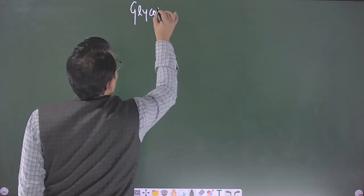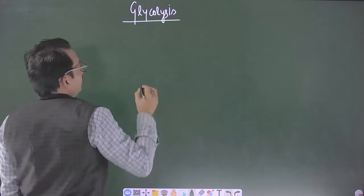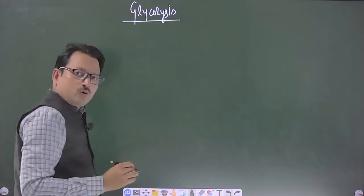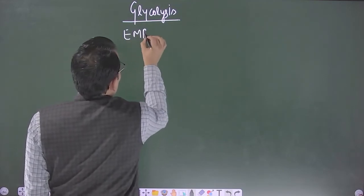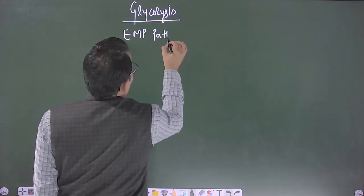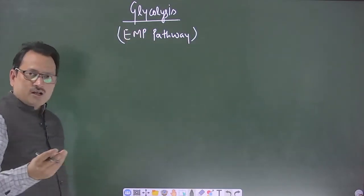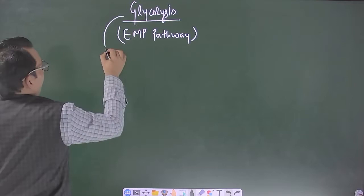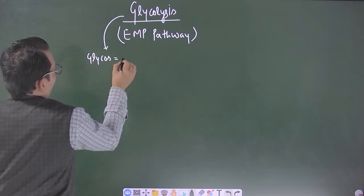The point is we are talking about a concept called glycolysis which can also be called as EMP pathway. The glycolysis that is clearly understood as word like glycos that is sugar in Greek language, the term glycos stands for sugar.